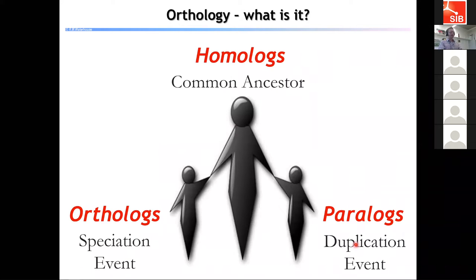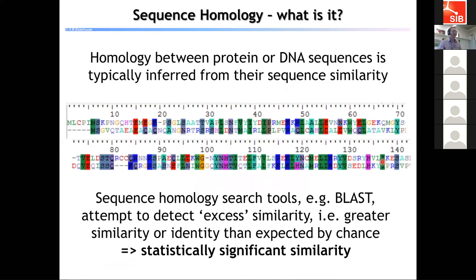Putting them all together: homology is the general term that simply posits common ancestry, and the two child terms are orthologs and paralogs — orthologs arise through speciation events and paralogs arise through gene duplication events. In the world of genomics we focus on the use of sequence homology to define orthologs and paralogs in the genomes of species that we are sequencing today.